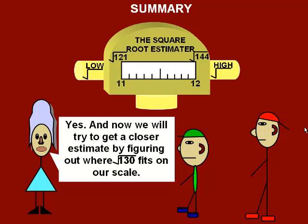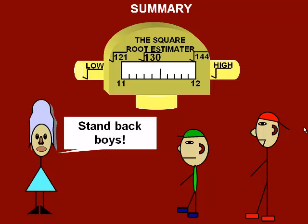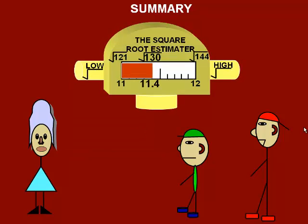Next, we'll try to figure out where exactly the square root of 130 fits on our square root scale at the top. And then we'll estimate where that fits with the decimal scale at the bottom. And we have our answer.